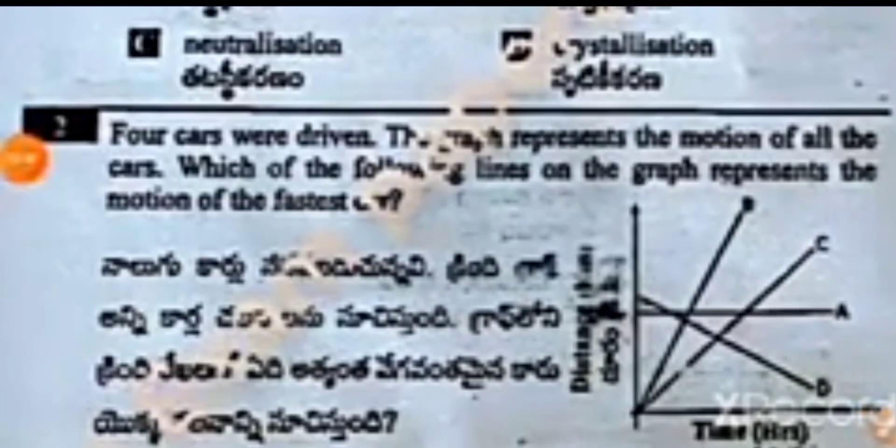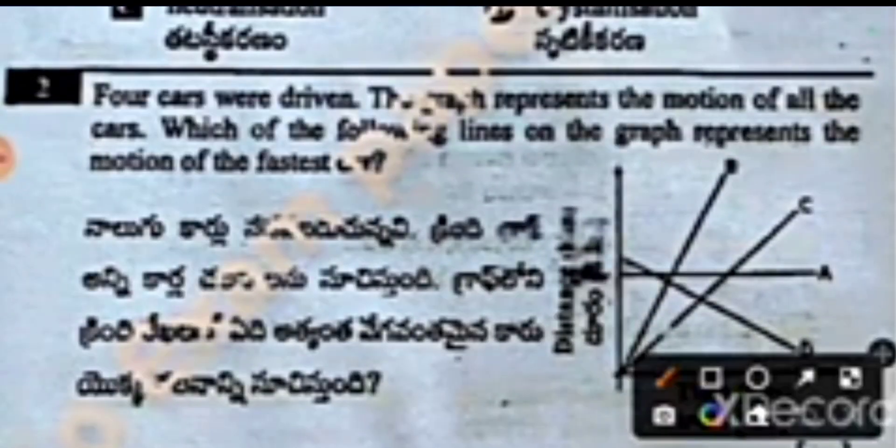The second question: four cars were driven, and the graph represents the motion of all the cars. Which of the following lines on the graph represents the motion of the fastest car? The four cars shown are car A, car B, car C, and car D. You have to answer which has the fastest motion.